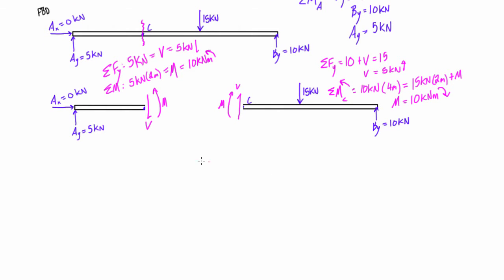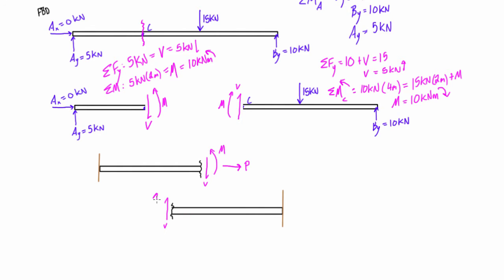We do have a sign convention for dealing with virtual cuts, internal shear forces, and moments. If we have a section of a beam and the virtual cut is on the right-hand side, a shear force pointing down is defined as positive. An internal moment curving counterclockwise is considered positive. An axial force inducing tension is also considered positive. On the opposite side, if the virtual cut is on the left-hand side, a shear force pointing upward is considered positive, and a clockwise moment is considered positive. An axial force inducing tension is also positive.